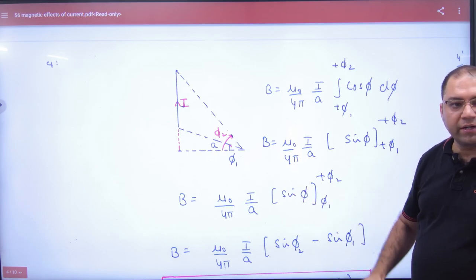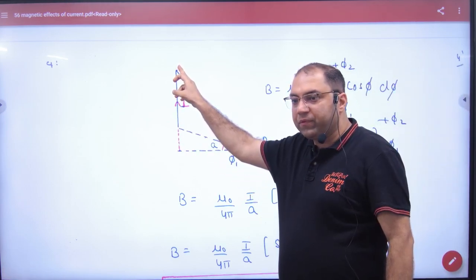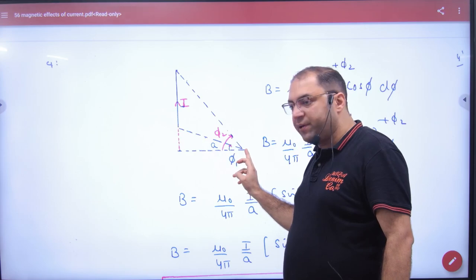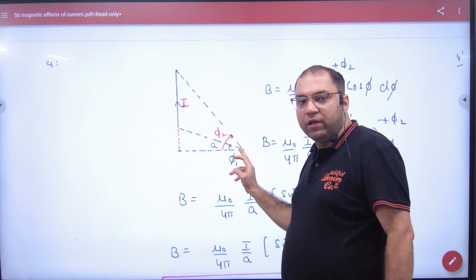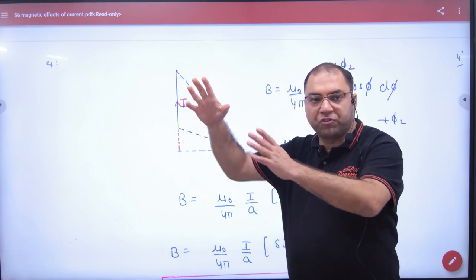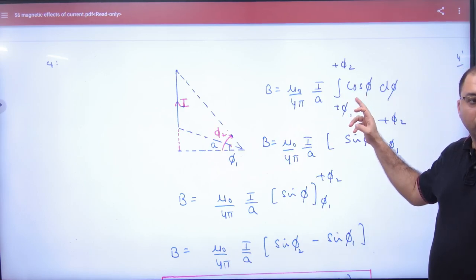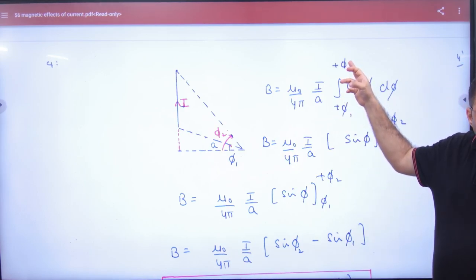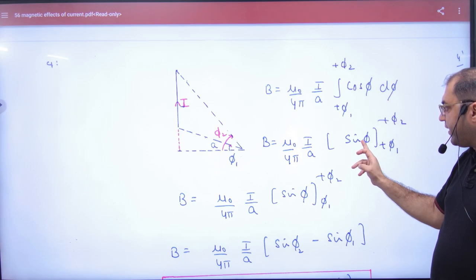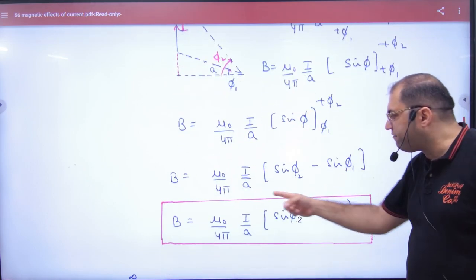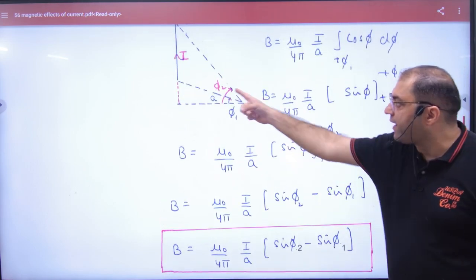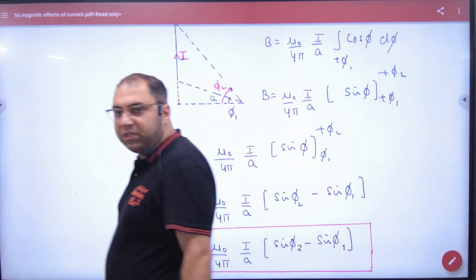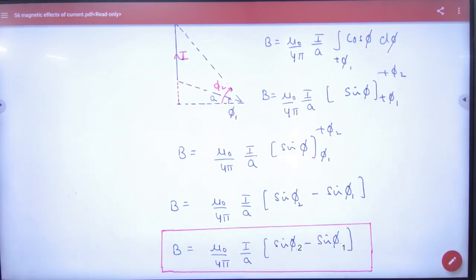So we make a standard result. The standard result is: if your wire is going on both sides here and you have to find B at a distance of a, then both angles phi1 and phi2 are positive in the limit. Then please note this formula.